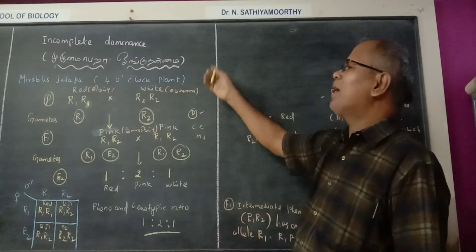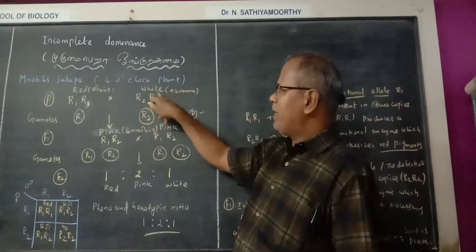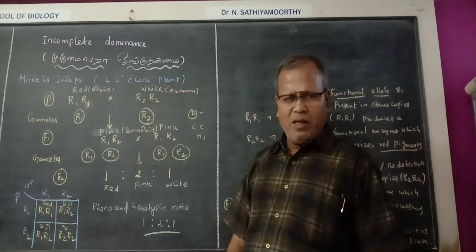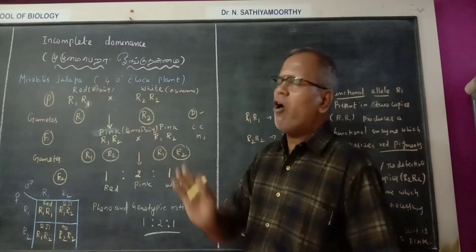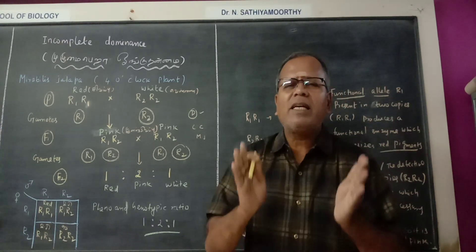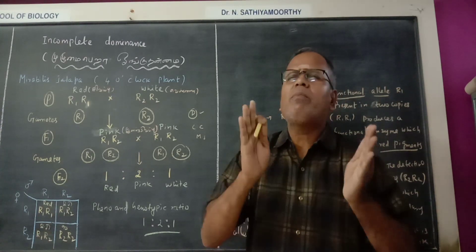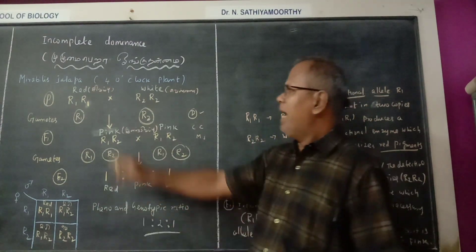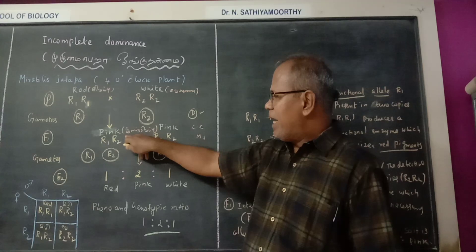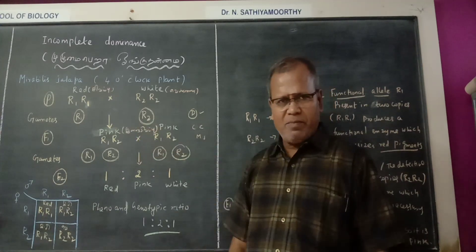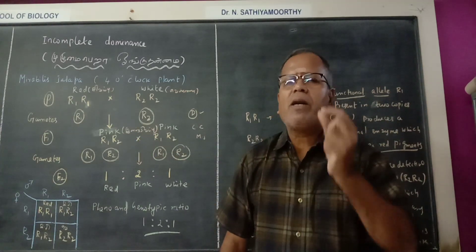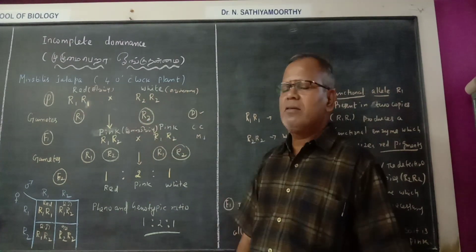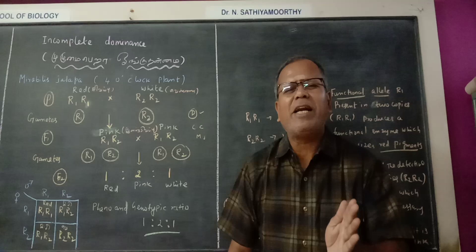Now, what is incomplete dominance? Red and white are crossed. If the F1 generation produces a phenotype which is a mixed expression of both the parents, then it is known as incomplete dominance.